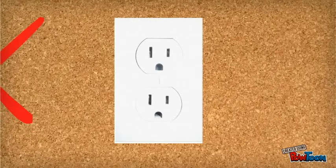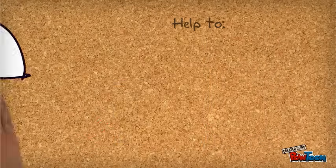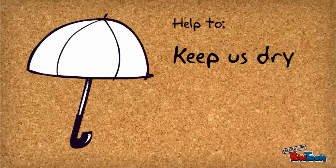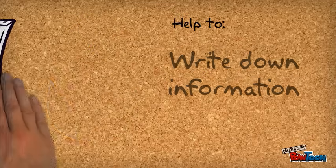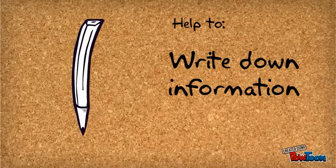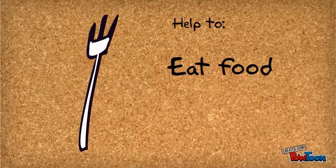But some technologies do not have wires at all. Umbrellas help to keep us dry in the rain, and a lock helps to keep our things safe. A pencil helps us write down information, and a fork helps us to eat food.